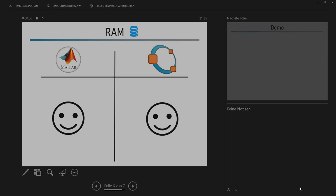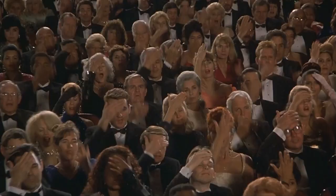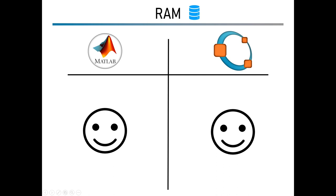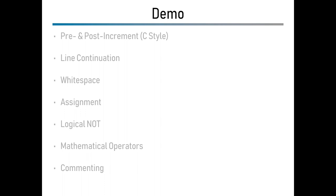For RAM and performance, I've put a smiley face on both sides. I've read that Octave might be a little bit slower, but MATLAB is very fast, especially if you know how to use it — you can even compile MATLAB code into C code. Don't fall into the trap of thinking that because MATLAB has a GUI it's slower. Both tools can be used in the CLI, and even using the GUI, both are very fast.